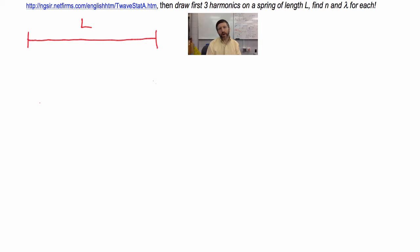What we want to do now is draw the first three harmonics for a transverse wave on a spring of length L. And for each of these, we're going to find n, and then we're going to find the wavelength for each of these. So this is a spring of length L. When you draw the harmonics, we need a way to show motion.